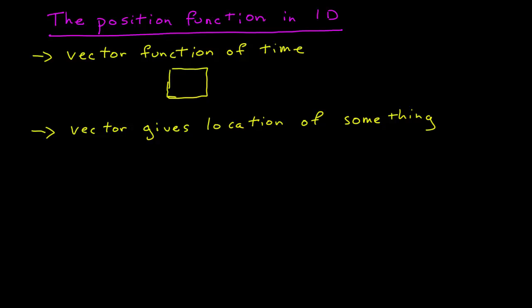In this video I want to introduce you to the position function in one dimension. It's important to know that the position function is a vector function of time. That means it's a function where you input a time and what you get out of it is a vector. What does this vector tell you? Well, this vector gives you a location of something.